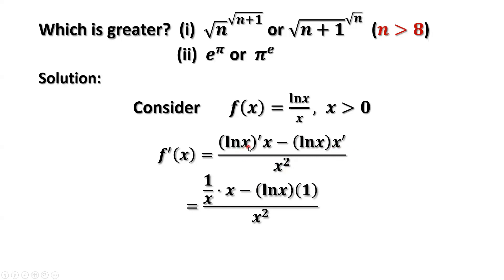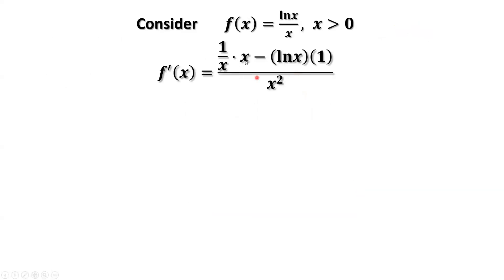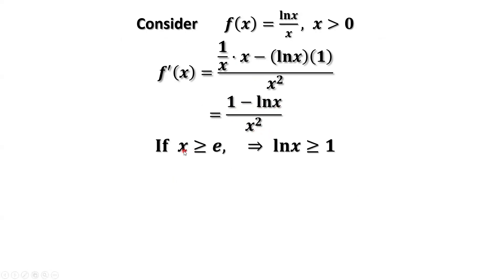The derivative of the numerator, log of x, is 1 over x, and the derivative of x equals 1. Simplifying the numerator, we have 1 minus log of x, divided by x squared. If x is bigger than or equal to e, we have log of x is bigger than or equal to 1. Therefore, the numerator is less than or equal to 0. Therefore, the first-order derivative of f of x is less than or equal to 0, because x squared is always positive.